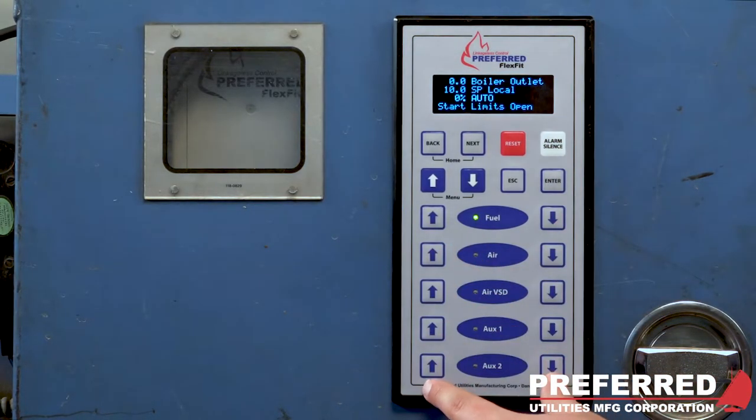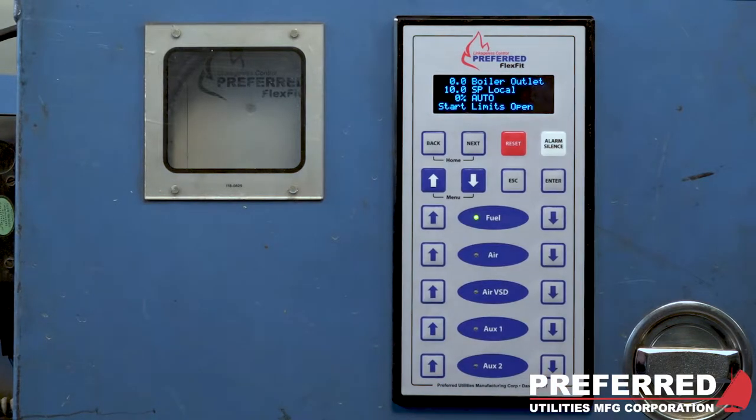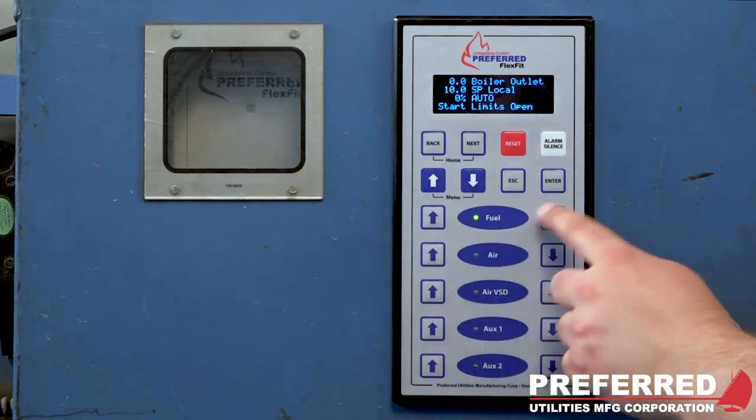These five pairs of up and down arrows are going to be associated with the outputs, whether it be your servos or VSD. And when you have those outputs in manual you can manually control with the up and down arrows.